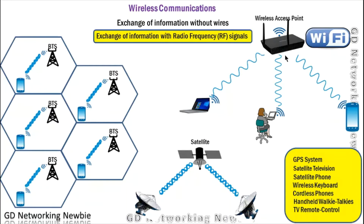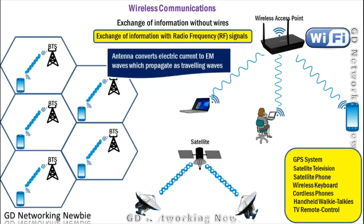The question is: who creates these electromagnetic waves that carry our information? The answer is the antenna inside the device. In the case of mobile or cellular communication, the handset has a built-in antenna. That antenna converts electric current into electromagnetic waves, which are then received by the BTS or tower, allowing us to convey our information.